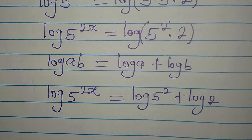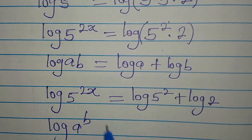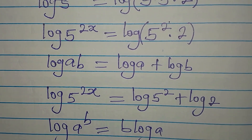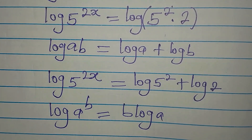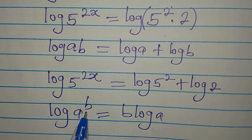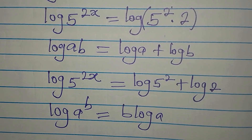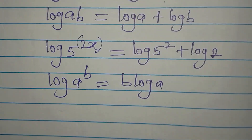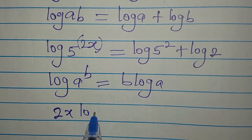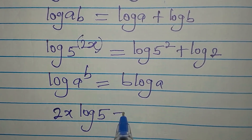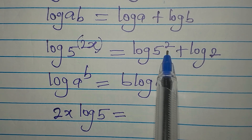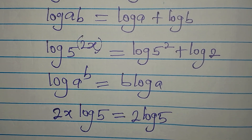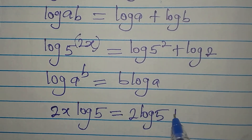From here, there's another law that says if you have log a to the power of b, it is the same thing as b times log a. So the power comes in front to multiply the log. Applying this, we have 2x times log 5 on the left, and on the right the power 2 comes in front to give 2 log 5, and we add log 2.